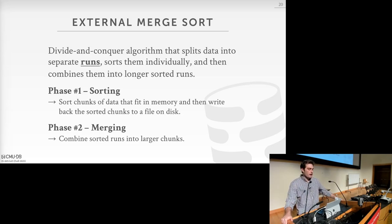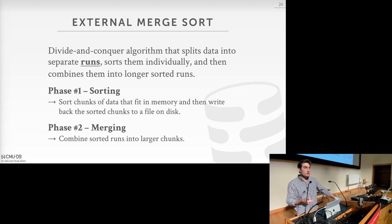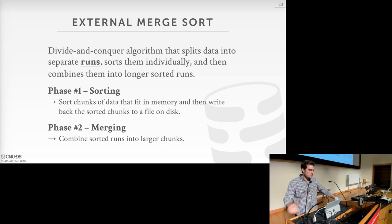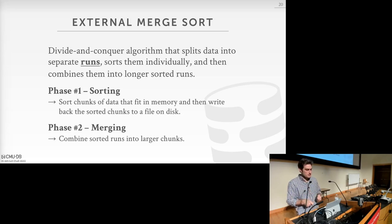External merge sort is a divide-and-conquer algorithm. We split data into separate pieces called runs, sort each run individually, then merge them back into longer sorted runs. Phase one (sorting) sorts individual chunks that fit in memory, then writes the sorted chunks to disk. Phase two (merging) combines sorted runs into larger sorted chunks.